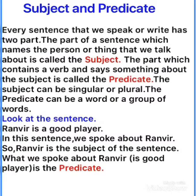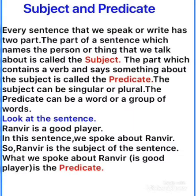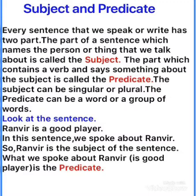Aap unhe check kar sakte ho, woh examples ko. Jaise 'birds fly in the sky' — so here birds kya hain? That is a noun, bird kisi ka name hai, kisi creature ka, jaise animal hain, birds hain. Toh jo birds hain yahan pe, woh subject hain. Birds ke baare mein baat ho rahi hai — what they are doing, woh fly in the sky. Birds sky mein fly karte hain. So here birds are the subject and jo rest of the sentence ka part hai, woh predicate hai.